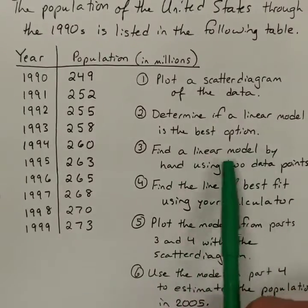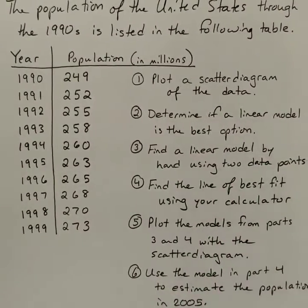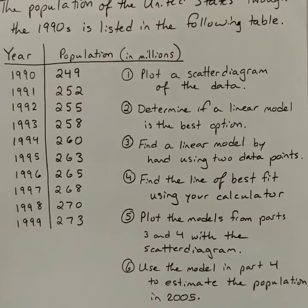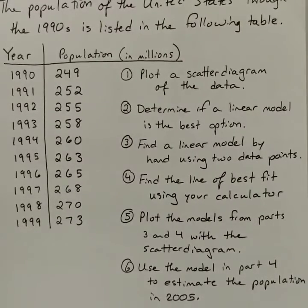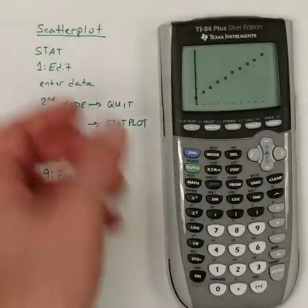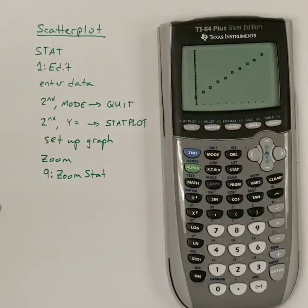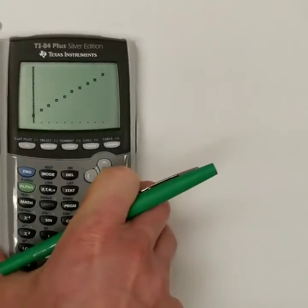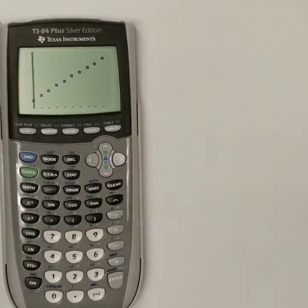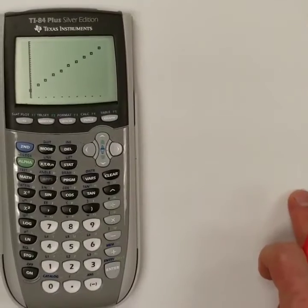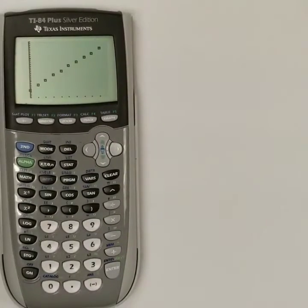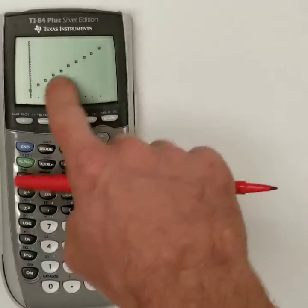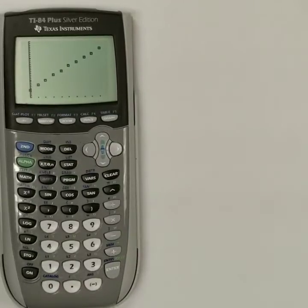Then it says, find a linear model by hand using two of the data points. So, here, I'm not going to do this with a calculator. I want to do this by hand. So, what I want to do, and I'm going to switch paper, go to a clean sheet here, and colors.